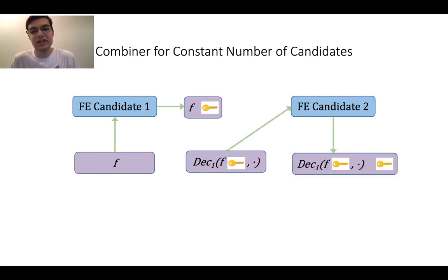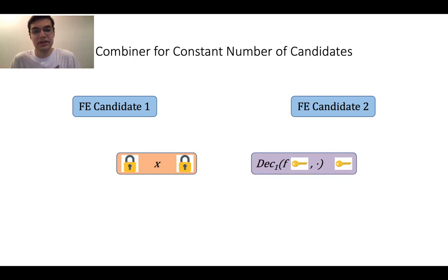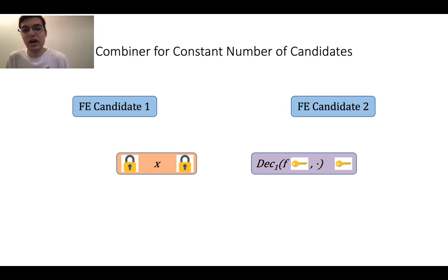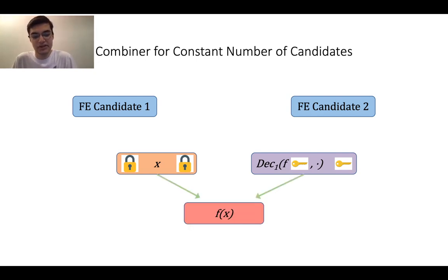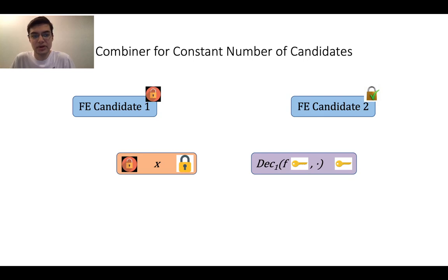If you have the ciphertext and the function key, you run the decryption procedure of candidate 1 using the function key for f on an encryption under candidate 1, which gives f(x) — so correctness holds. For security: suppose the second candidate is secure and the first is broken. Intuitively, one layer of encryption is broken, but since the message is doubly encrypted, the second layer remains secure and the message remains secure. This can be formally proved. Moreover, this approach extends to any constant number of candidates — you could nest, for example, ten candidates in the same way.